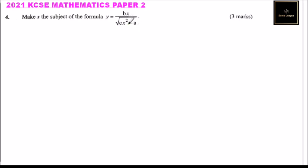Because we have x in the numerator and x in the denominator, we have to find a way of bringing them together so that we make x the subject. So what we do is start by squaring both sides.